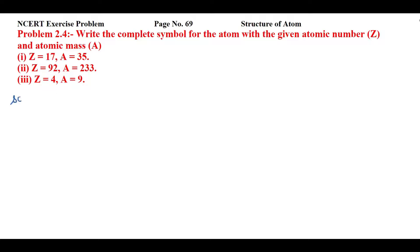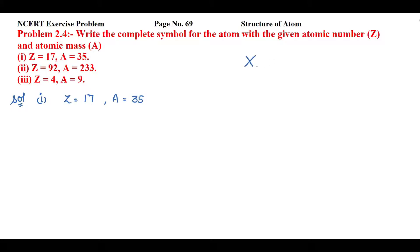We'll see the first problem: Z equal to 17 and A equal to 35. How we can define the complete symbol of this particular problem? I am assuming this element as X. The value present in the subscript is atomic number, and the value present in the superscript is atomic mass.